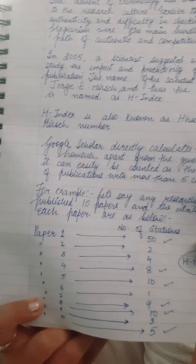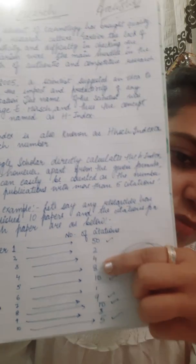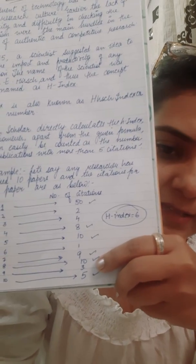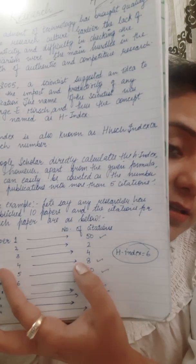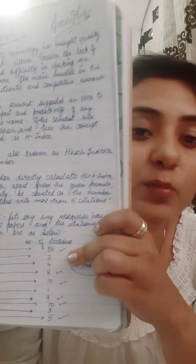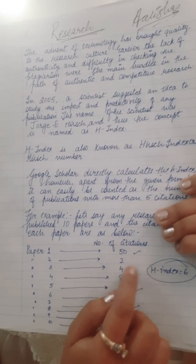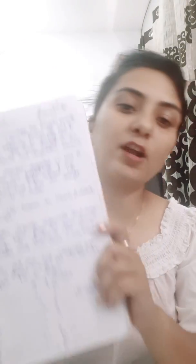Let me show you in my notebook. Let's say I have published 10 papers and the citations for those papers are: 50, 2, 4, 8, 10, 1, 9, 10, 3, and 5. To check the H-index of a particular author or scientist, any paper that has more than five citations will be counted. So here: 50, 8, 10, 9, 10, and 5 — these papers qualify.